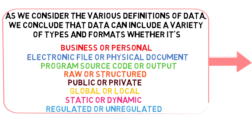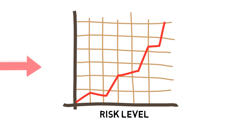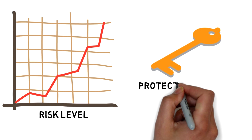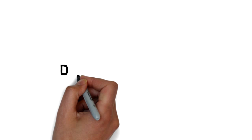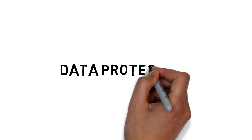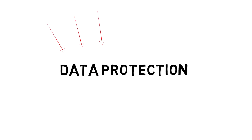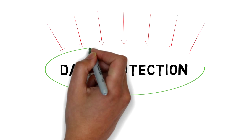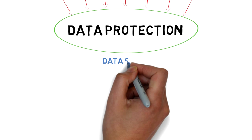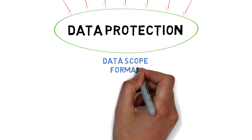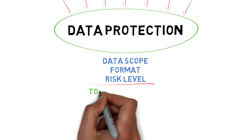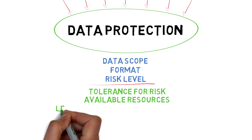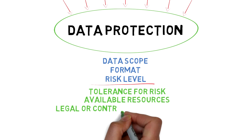These definitions help us establish the risk level for each data category, which then helps us define our protection strategy. Our data protection efforts will depend on many of the assumptions that we make about the nature of data, and our ability to protect the data, such as data scope, format, or risk level, and our tolerance for risk, available resources, and legal or contractual obligations.